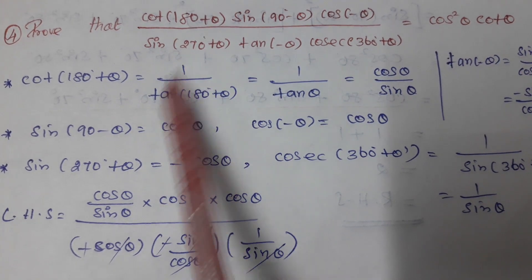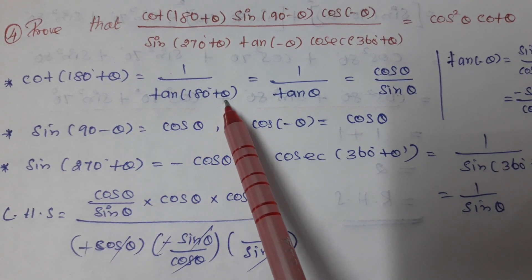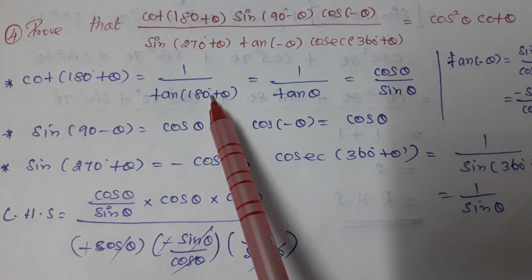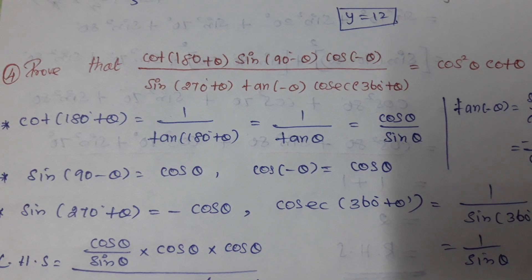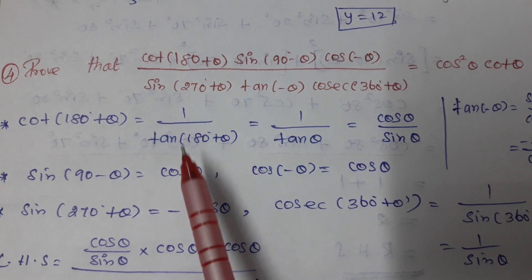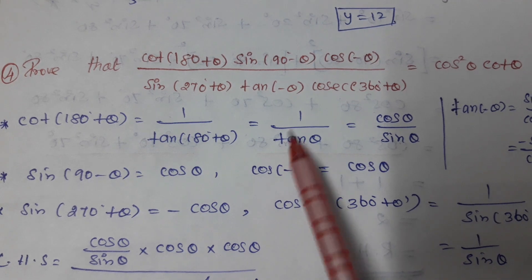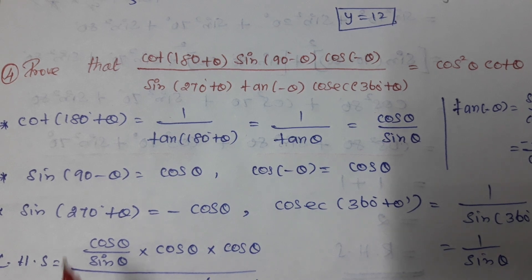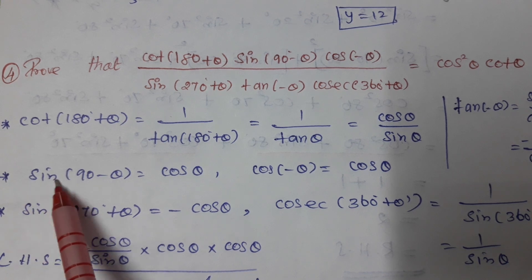We can write cot(180+θ) as 1 by tan(180+θ), which equals 1 by tanθ. We write sin/cos and cos/sin. Next, sin(90−θ) is in the first quadrant, so it is positive and equals cosθ.